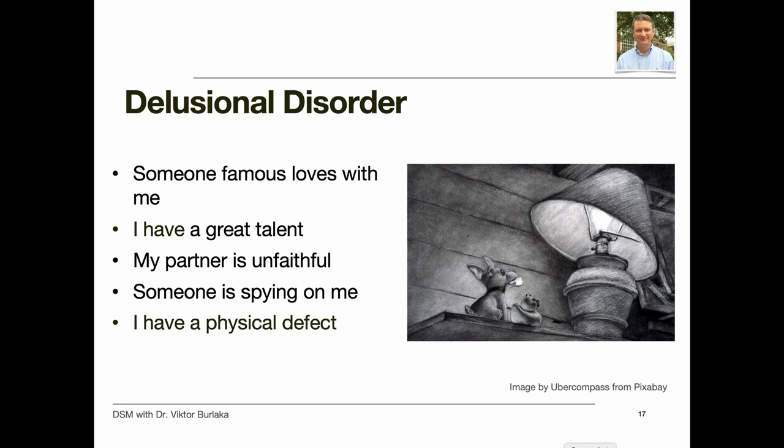The main feature of delusional disorder is the presence of delusions — unshakable beliefs in something untrue. People with delusional disorder experience non-bizarre delusions, which involve situations that could occur in real life, such as being followed, poisoned, deceived, conspired against, or loved from a distance. These delusions usually involve the misinterpretation of perceptions or experiences. In reality, however, the situations are either not true at all or highly exaggerated.